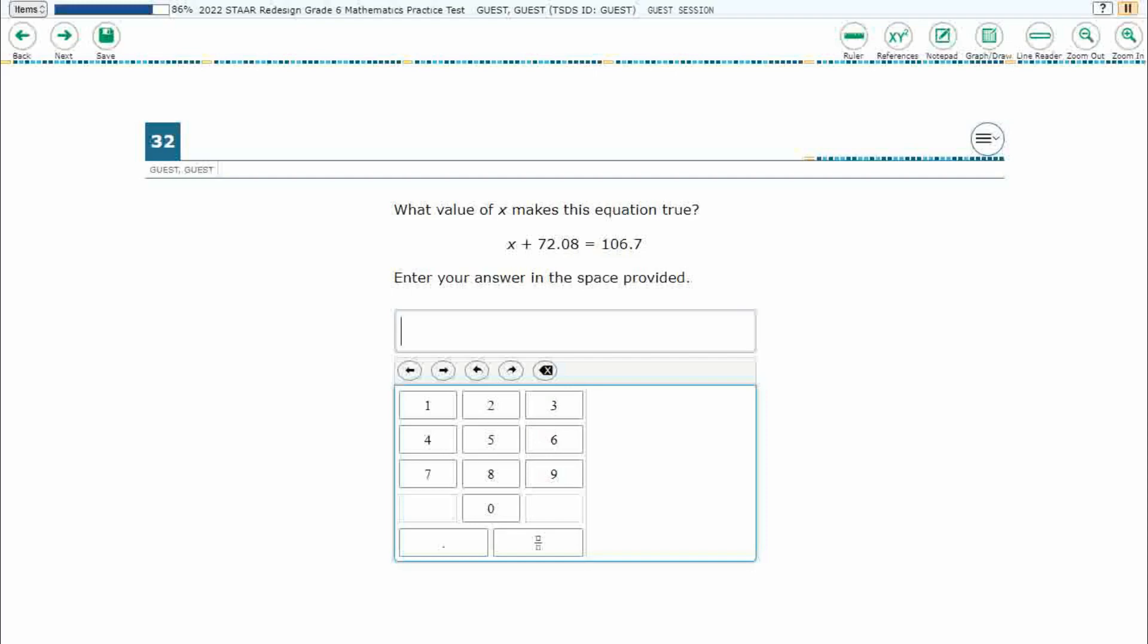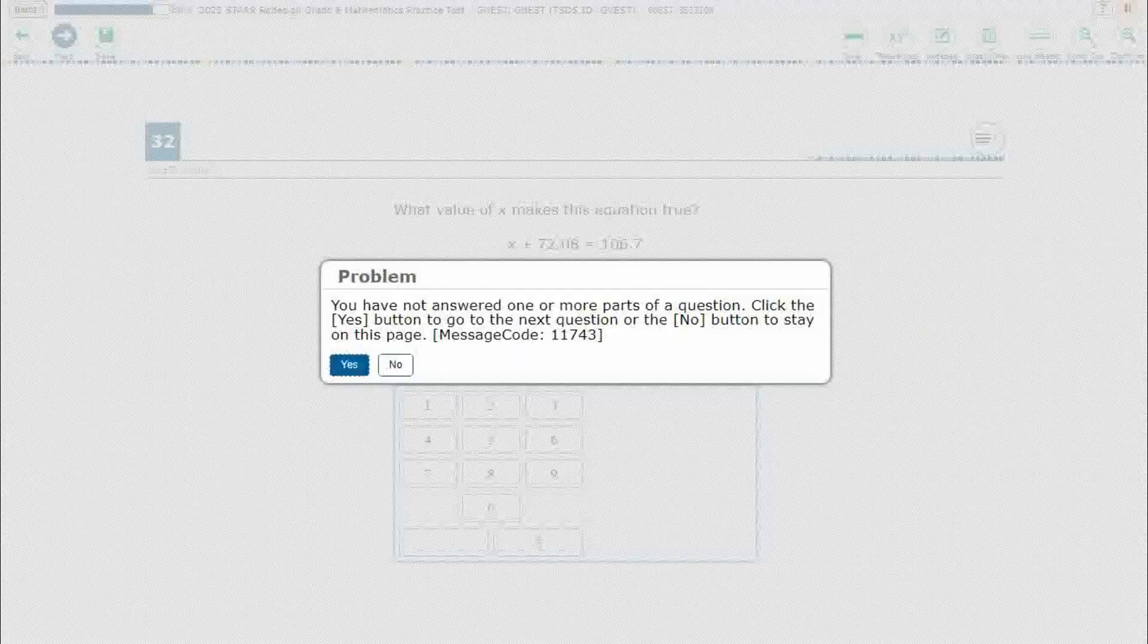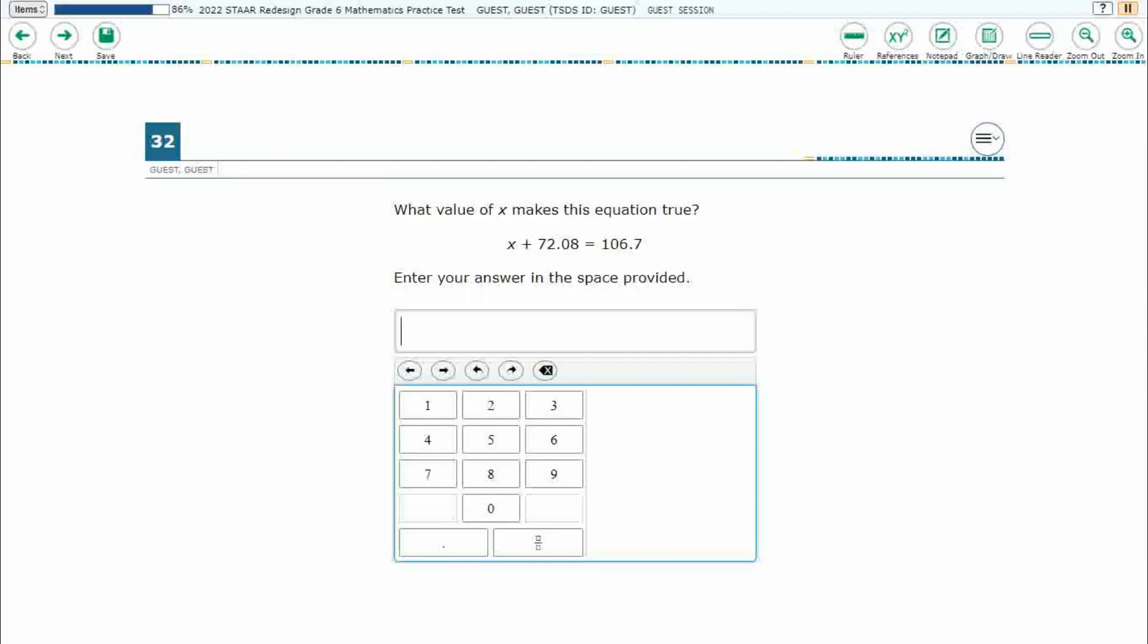So we have this new item type. It's simply called Equation. We're going to have to type something in. It could be a decimal, or it can even be a mixed number or fraction. If we do attempt to move on without typing anything in, we will get an error message that says you have not answered the problem. So let's make sure we don't leave it blank.